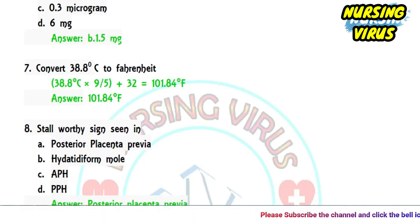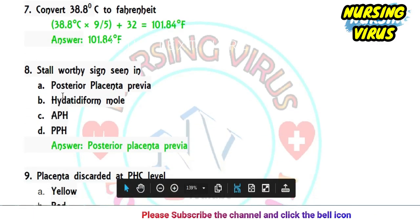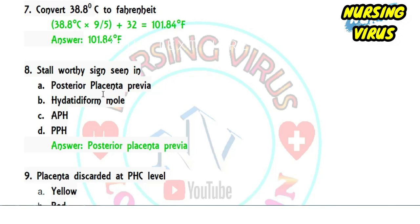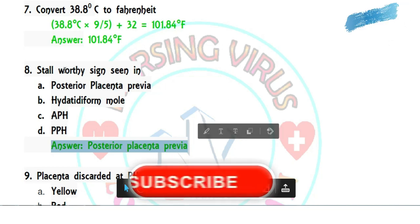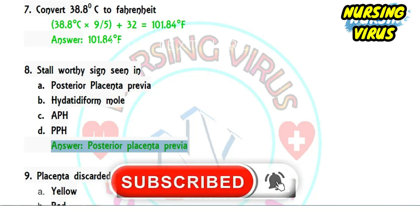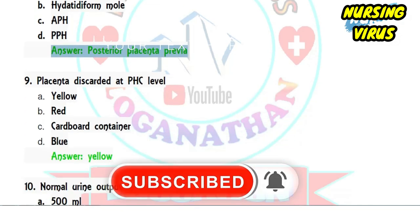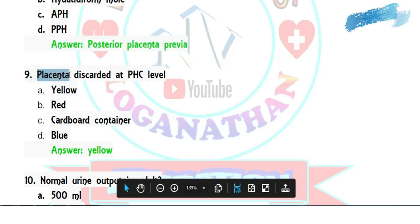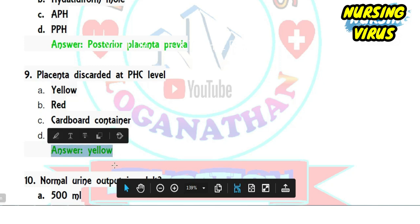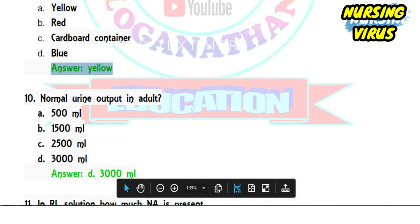Question 8: Stallworthy's sign is seen in which condition — posterior placental previa, hydatidiform mole, APH, or BPH? The correct answer is posterior placental previa. Question 9: placenta is discarded at PHC level in which bin — yellow, red, cardboard, or blue? Since placenta is considered human waste, it is disposed of in the yellow bin.